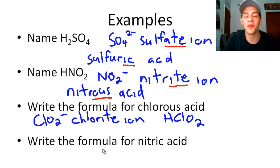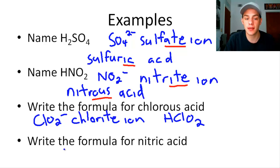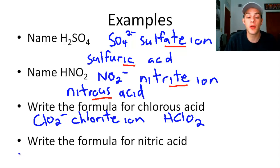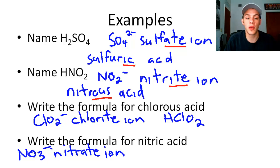This problem asks us to write the formula for nitric acid. The -ic suffix tells us we're using the oxyanion ending in -ate, which is the nitrate ion — NO3 minus. Since the nitrate ion has one negative charge, we need one hydrogen. So the formula is HNO3.